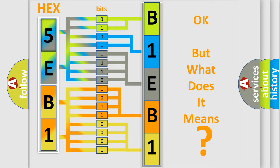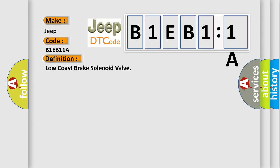So, what does the diagnostic trouble code B1EB11A interpret specifically for Jeep car manufacturers? The basic definition is low-cost brake solenoid valve. And now this is a short description of this DTC code.